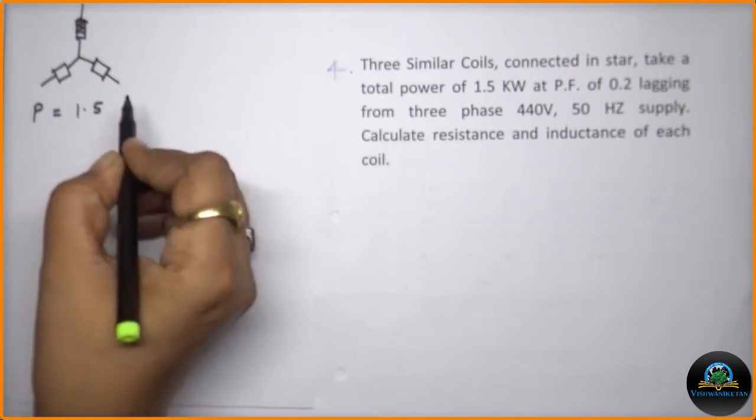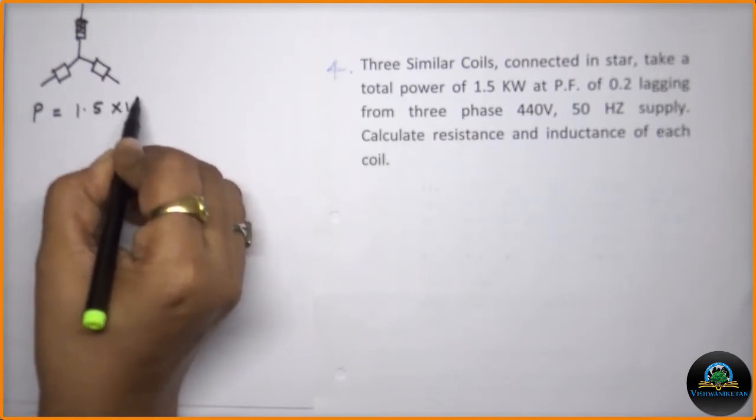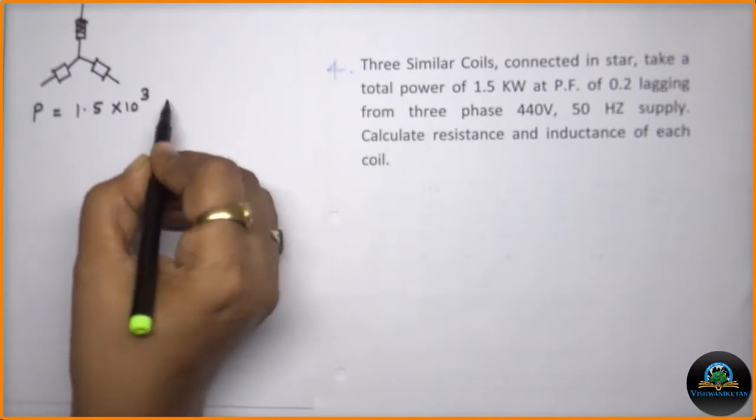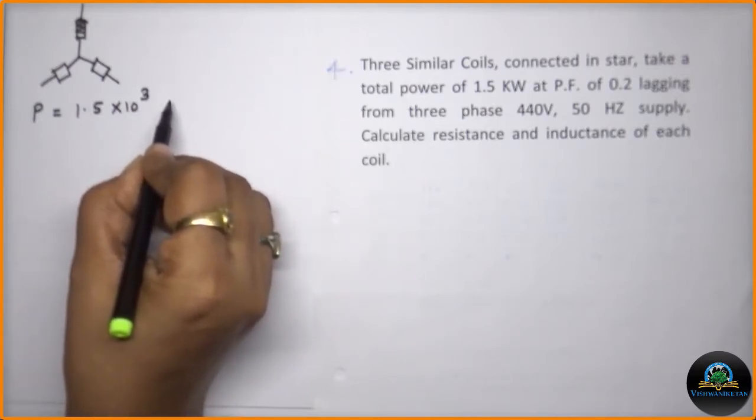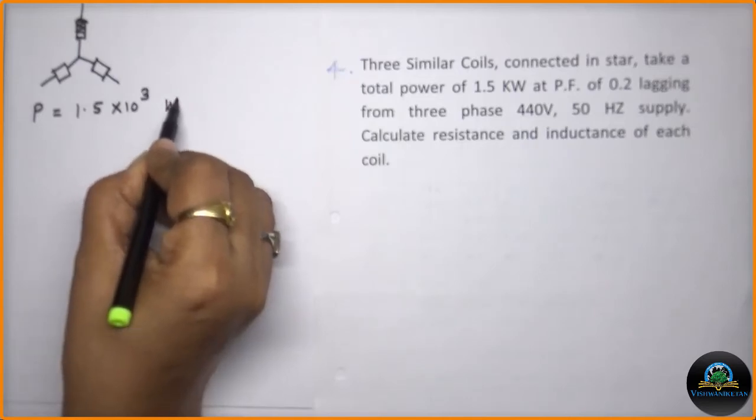The values which are provided to us, these are total power which is equal to 1.5 kilowatts. So as it is kilowatts I am multiplying by 10 raised to 3. So for the further calculation it will be easy for us.